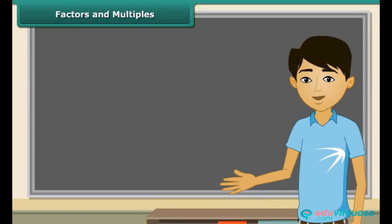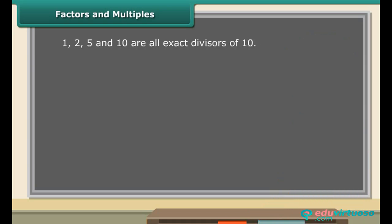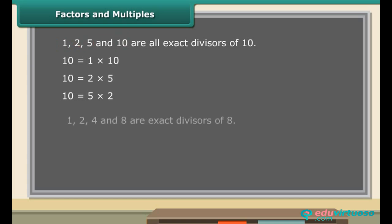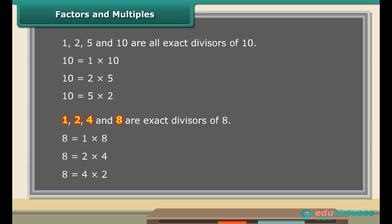A factor of a number is an exact divisor of that number. In other words, the factor of a number divides the number exactly. For example, numbers 1, 2, 5 and 10 are all exact divisors of 10, therefore 1, 2, 5 and 10 are factors of 10. Similarly, 1, 2, 4 and 8 are exact divisors of 8, therefore 1, 2, 4 and 8 are factors of 8. Factors are always smaller than or equal to the number itself. Number 10 is the product of 2 and 5, and also a product of 1 and 10.